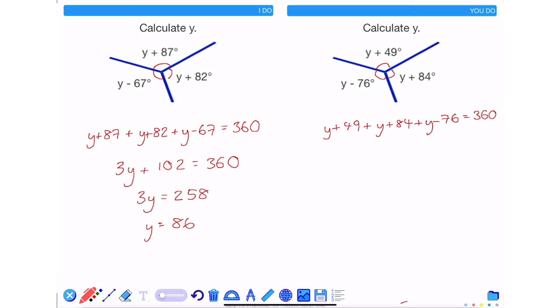Simplifying the left hand side gives 3y + 57 = 360 degrees. Subtracting 57 from both sides gives 3y = 303 and dividing both sides by 3, y = 101.